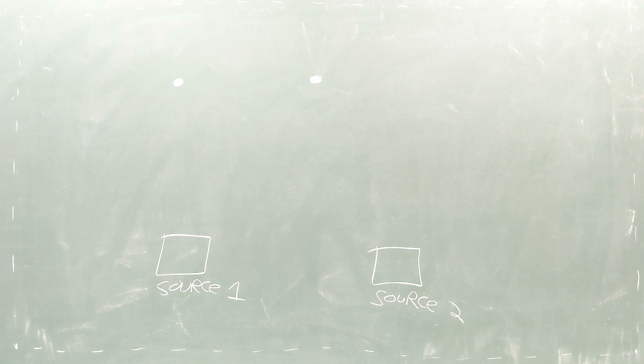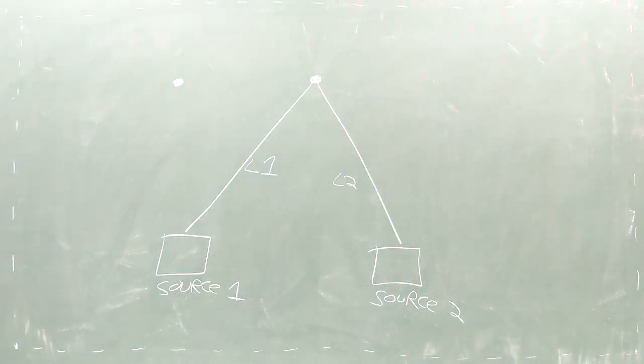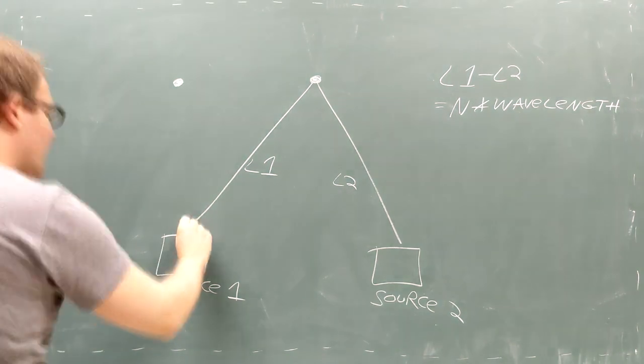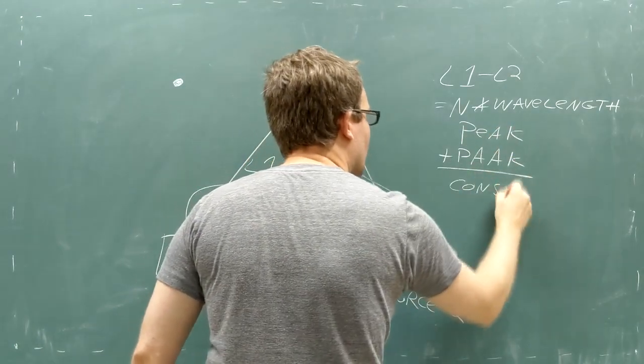We can determine which will happen by comparing the distances between this point and the two speakers. Let's call these distances L1 and L2. If L1 and L2 differ by a whole number times the wavelength, then the two waves are each overlapping at a peak and we have constructive interference making a stronger wave.